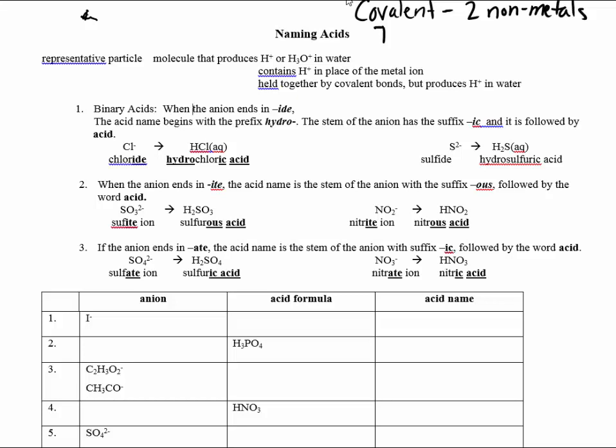Then we've spent a day naming ionics. How do we know it's an ionic? It has a metal with a non-metal. Now we're going to be naming a third type. And this third type, again, has its own rules. We're going to be naming acids.